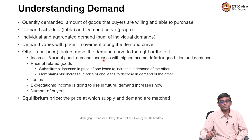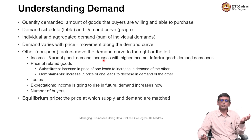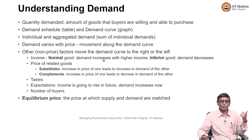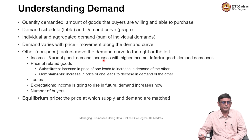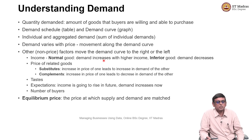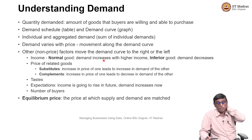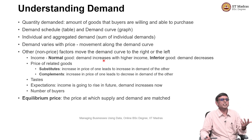If you put the consumption of individual customers together, you get the concept called demand. This total demand can be captured using what is called a demand schedule — a table which tells you how much demand there is at different price points — or you can plot that as a graph. When you change price, when you increase the price, the demand reduces; when you reduce the price, the demand increases. When companies give discounts during festivals, suddenly the demand increases because people are waiting for that discount. Demand varies with price, and this is represented by movement along the demand curve.